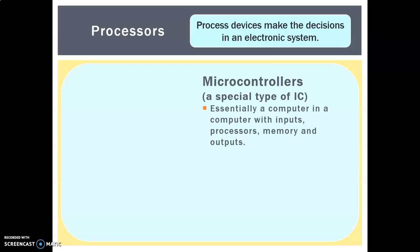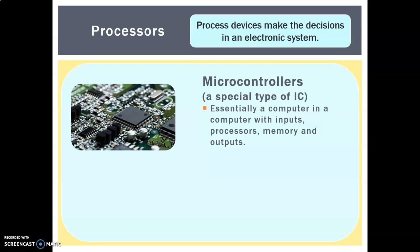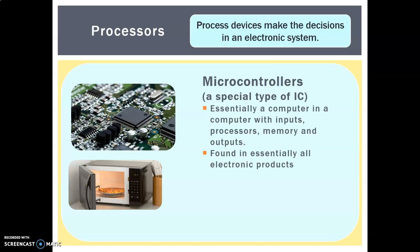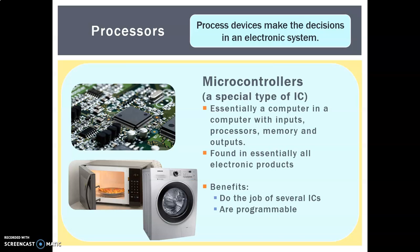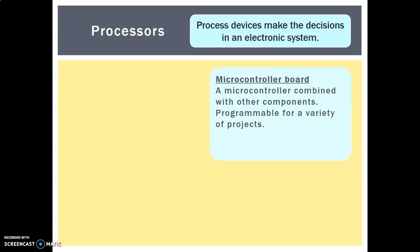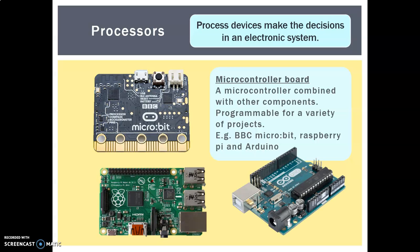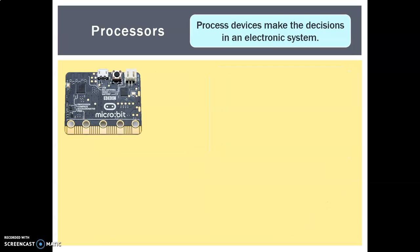We also have microcontrollers, which are a special type of IC — essentially a computer within a computer. They have their own inputs, processes, memory, and outputs. These are the kinds found on complicated circuit boards like in your computer. They're found in essentially all electronic products — from basic ones like your microwave, washing machine, and dishwasher. The benefits are that they do the job of multiple ICs and they are programmable, though they are more expensive than other integrated circuits. Microcontroller boards like the BBC micro:bit, Raspberry Pi, and Arduino combine microcontrollers with other components and are also programmable.